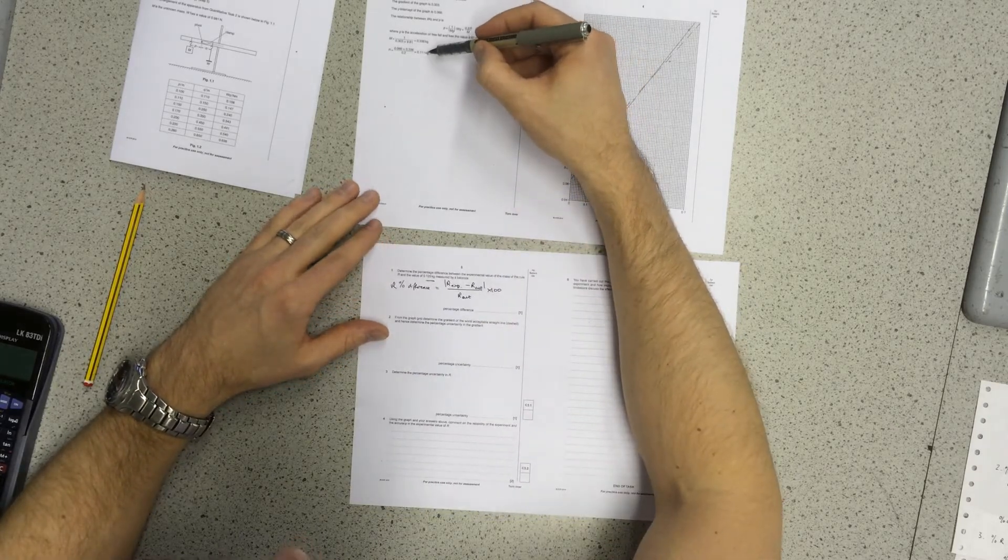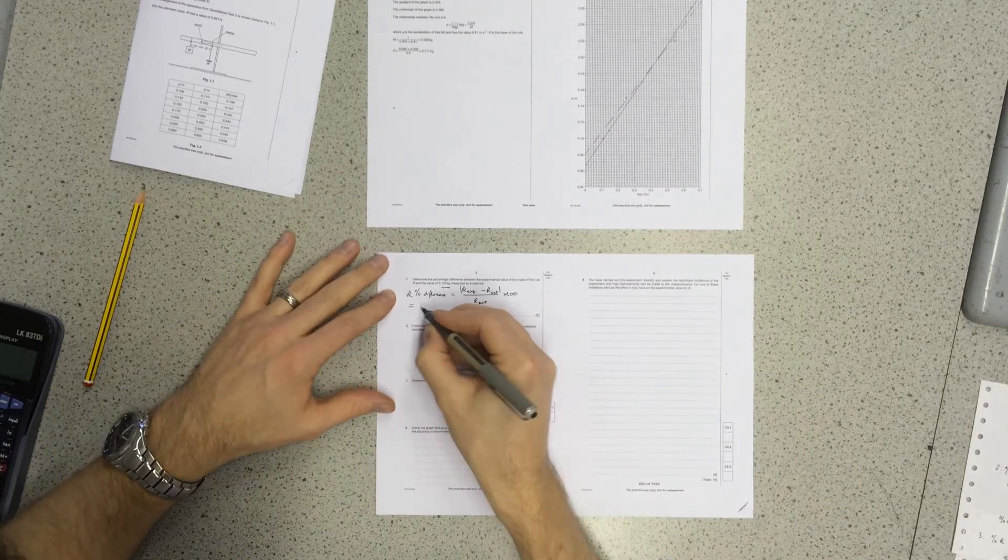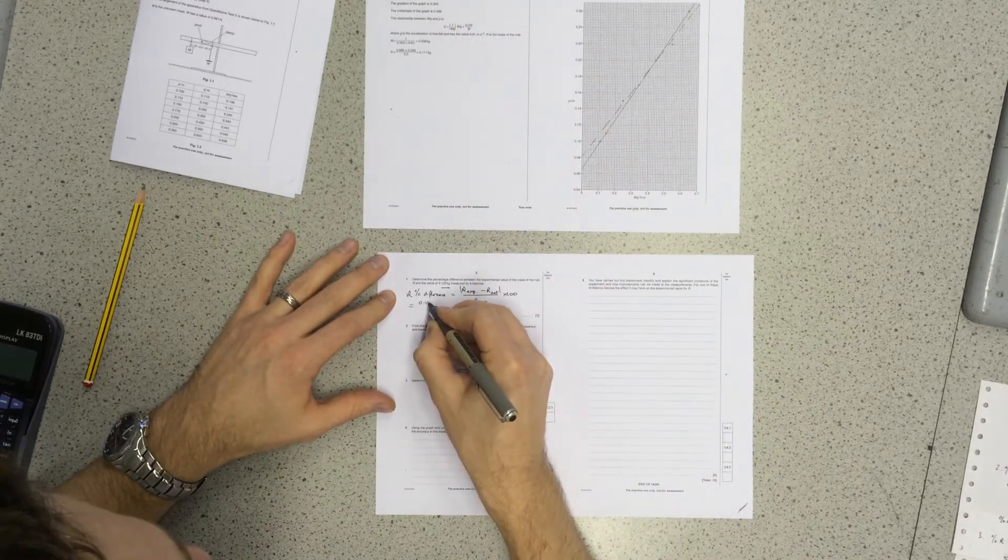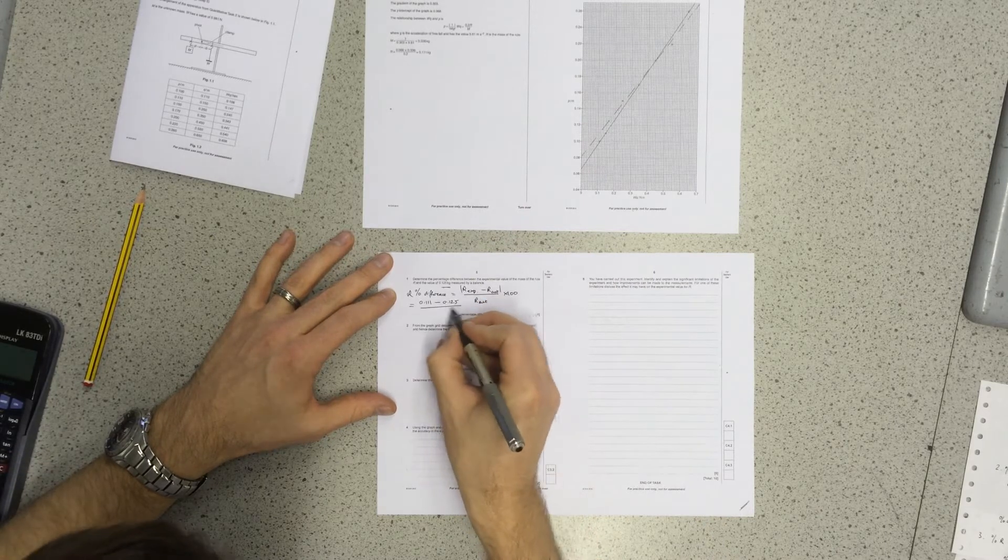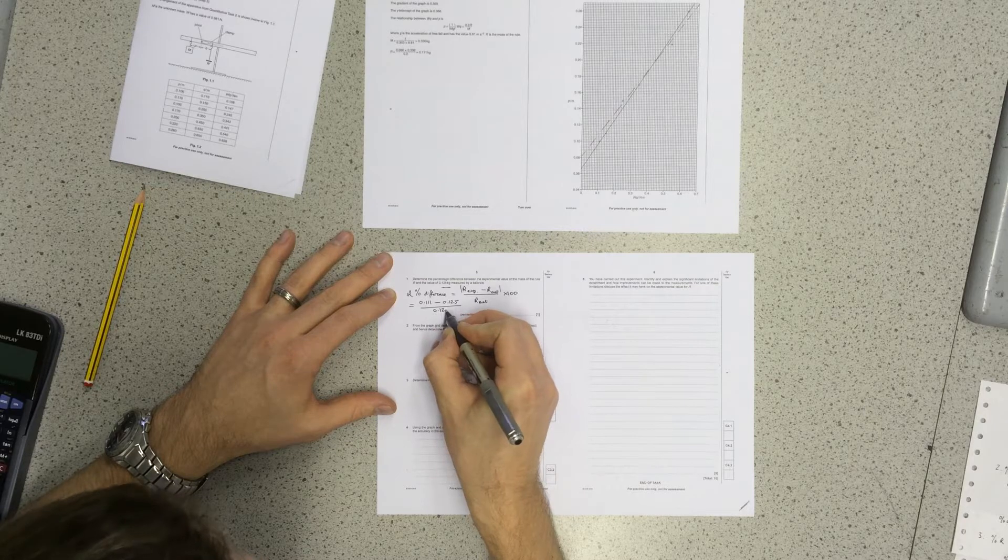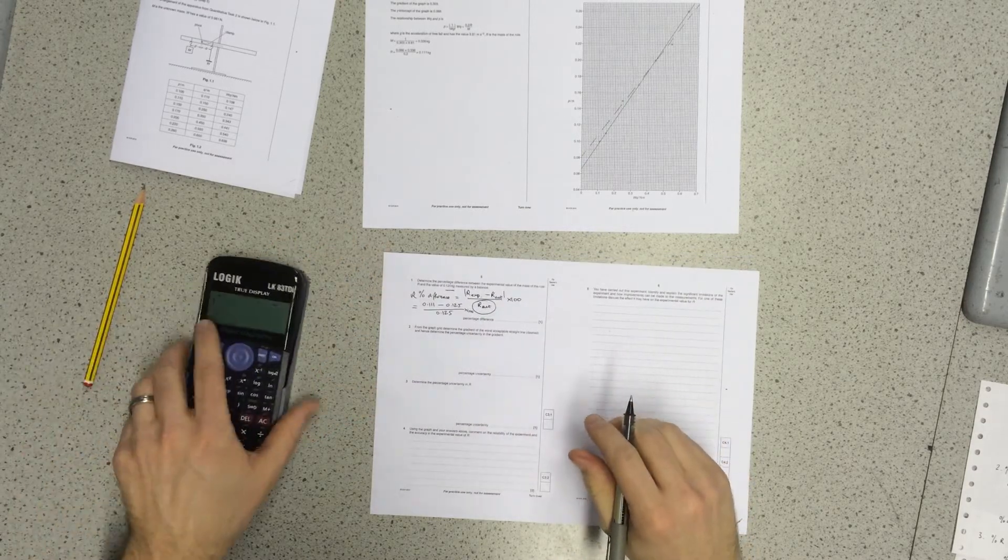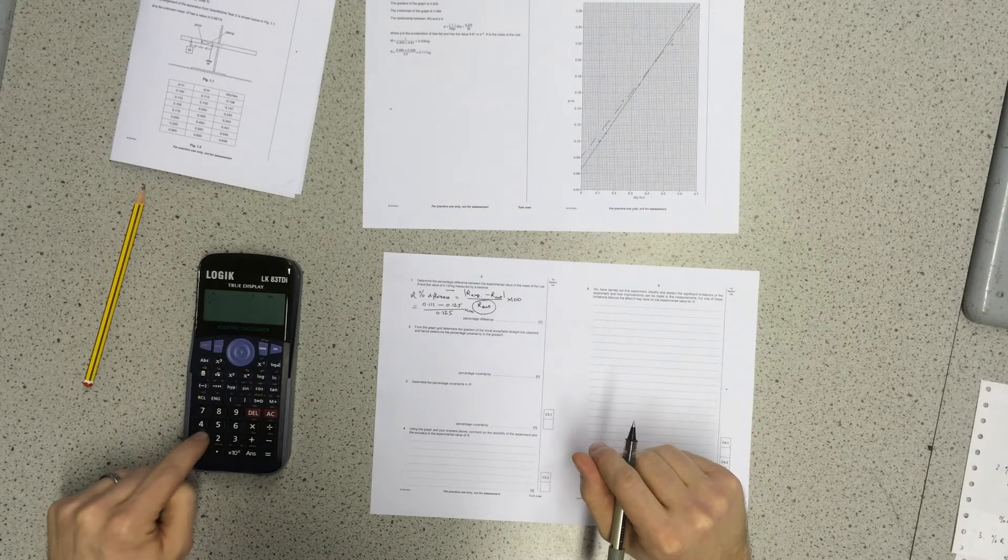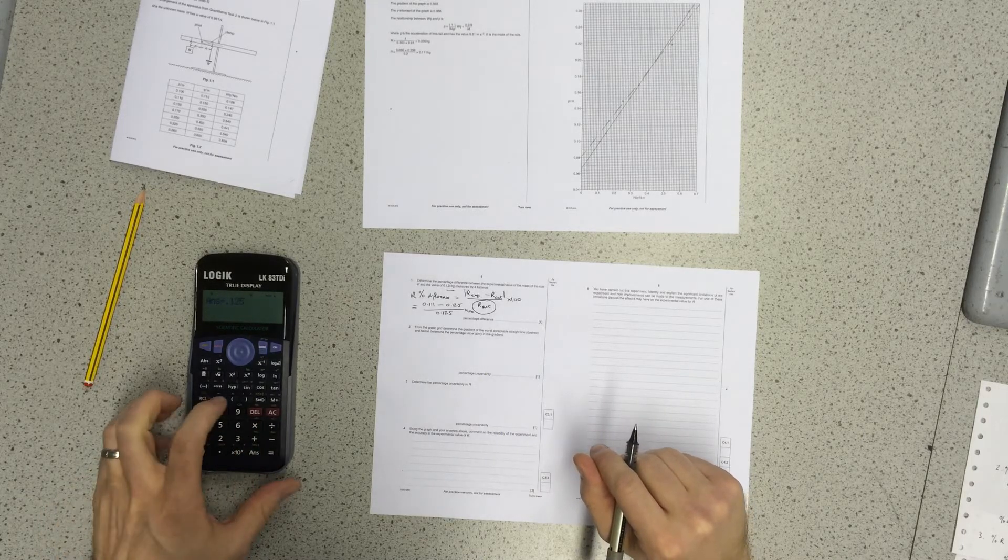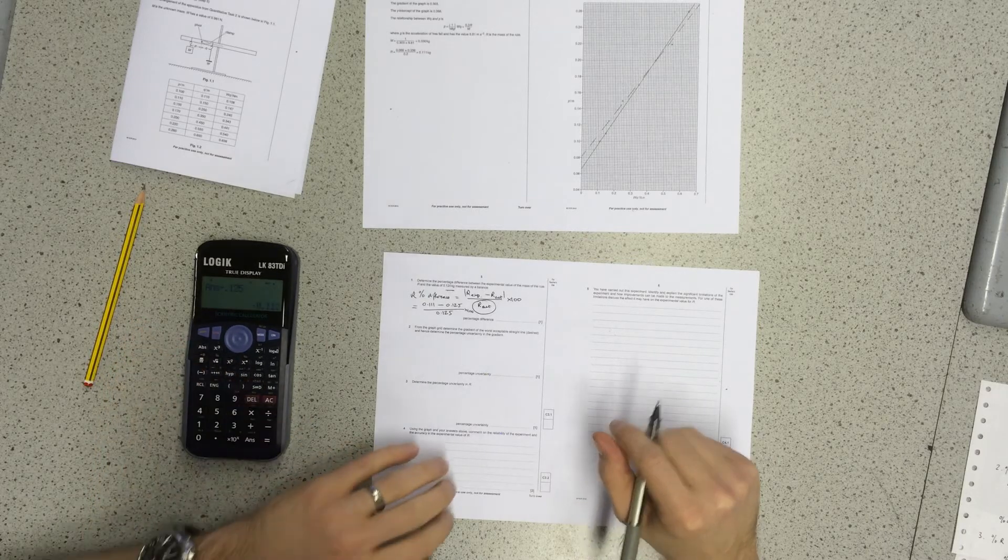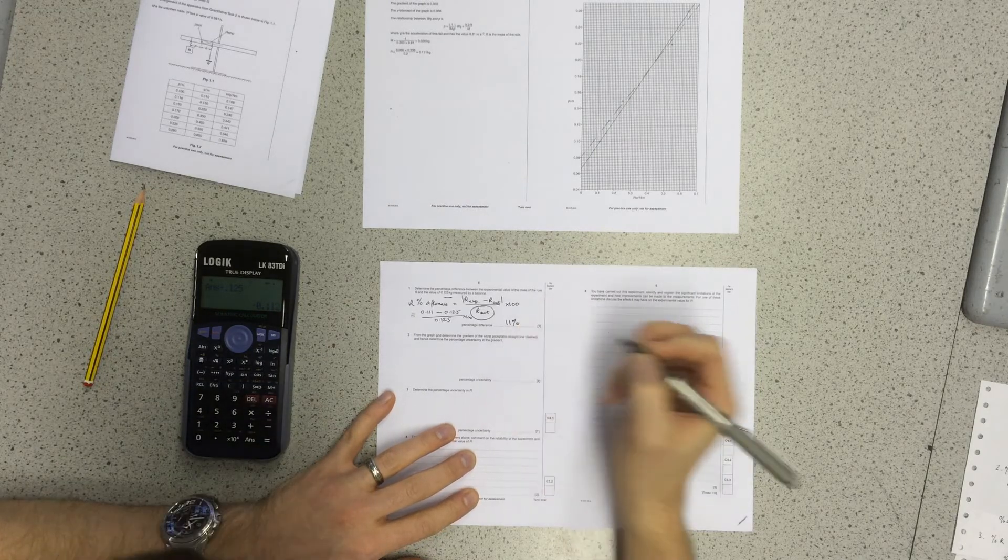The experimental value is in this set of data here, which is the calculated value of R up there. So percentage difference: experimental, this one, 0.111, minus the actual, here, 0.125, divided by the actual, 0.125. Make sure you divide by the actual and not the experimental. And that's times 100. So if I calculate that, just ignoring the negative, times 100, that's 11%. That's my percentage difference calculation done.